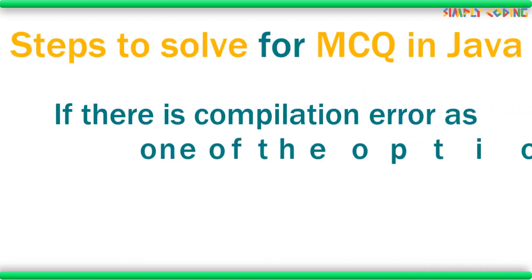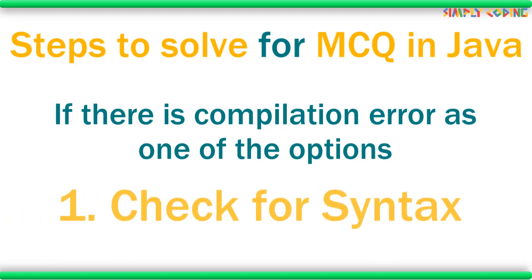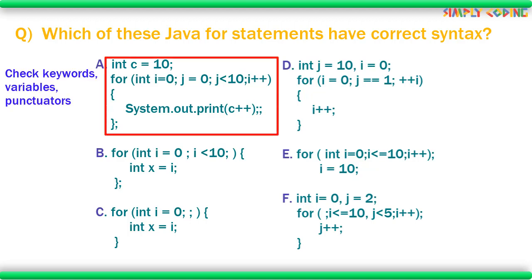Now to solve MCQs, if there is a compilation or syntax error as one of the options, the first thing you need to do is check for the syntax. For syntax, the first thing to check is if all the keywords such as for, int, etc. are in lowercase and variables are named as per naming convention and there is no missing or extra punctuators. Like in this, there is an extra semicolon in for. A for loop has exactly two semicolons — it cannot have more or less.